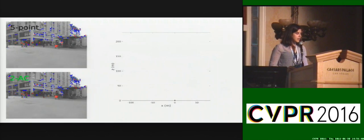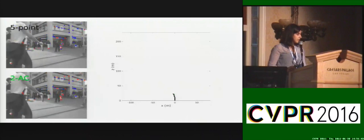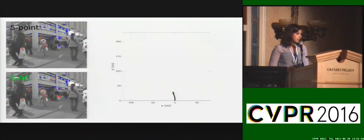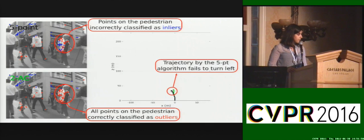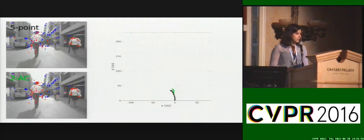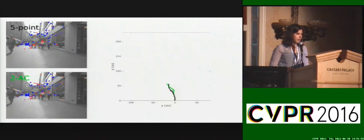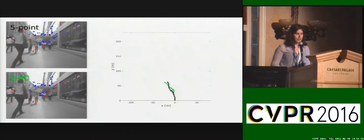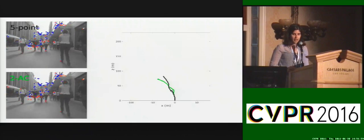This allows us to deal with strong deformations as shown in this experiment. We show the camera trajectories on the right, with inliers and outliers in blue and red. This example shows that the strong pedestrian motion causes the five-point algorithm to fail in correctly identifying outliers, yielding a large error in the trajectory shown in black.